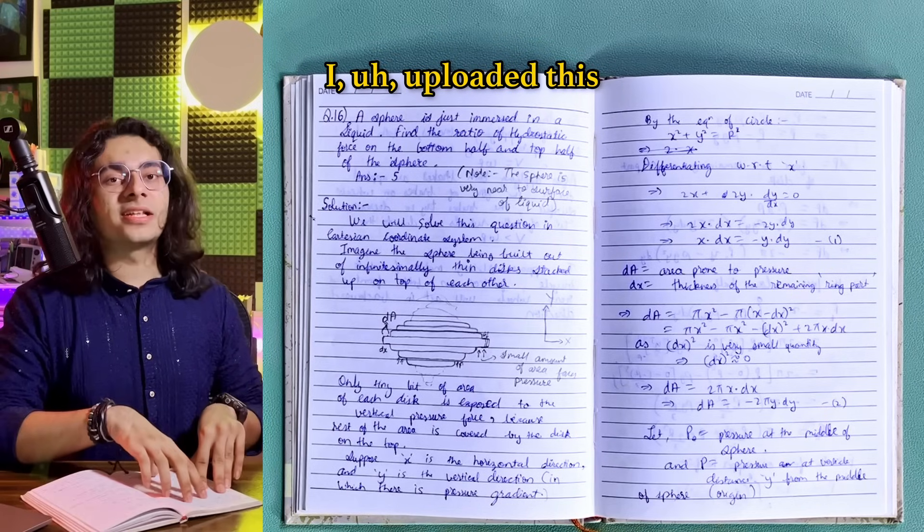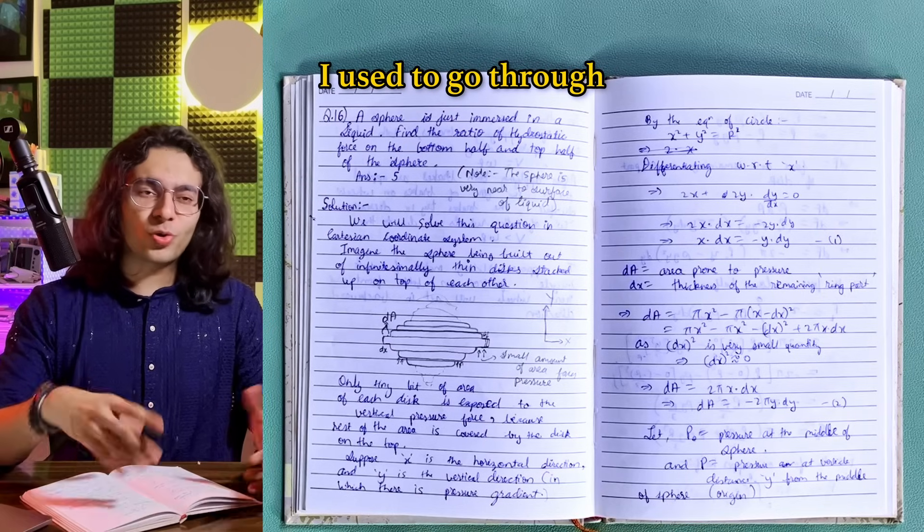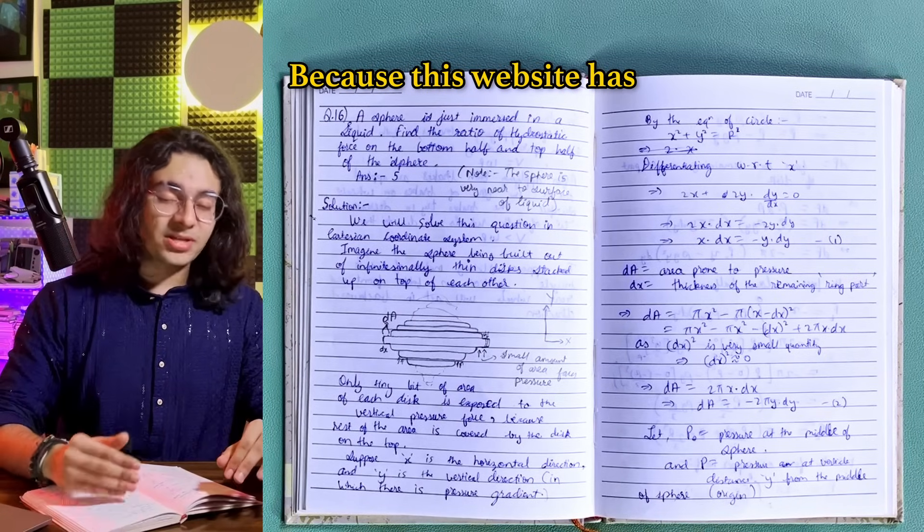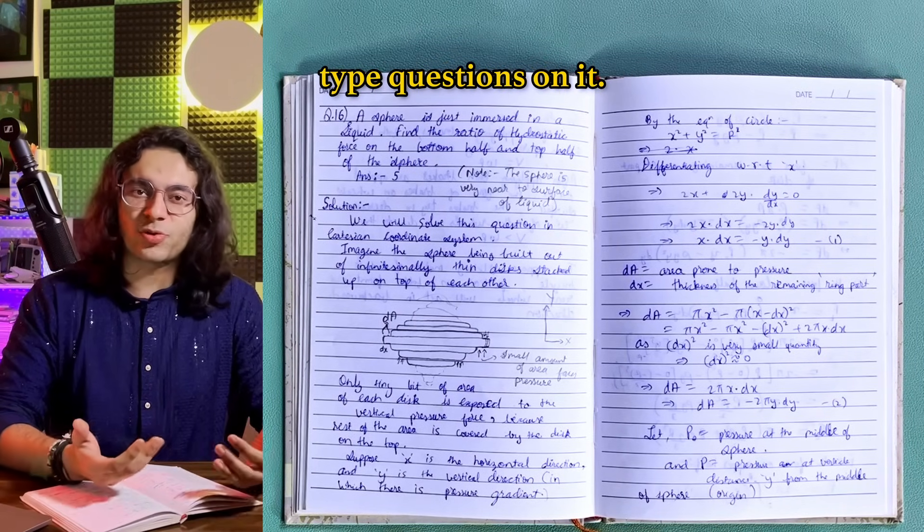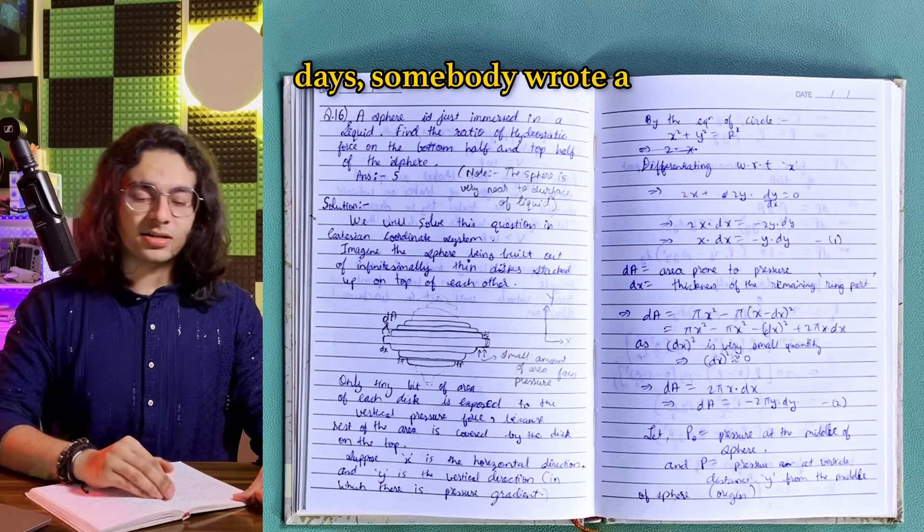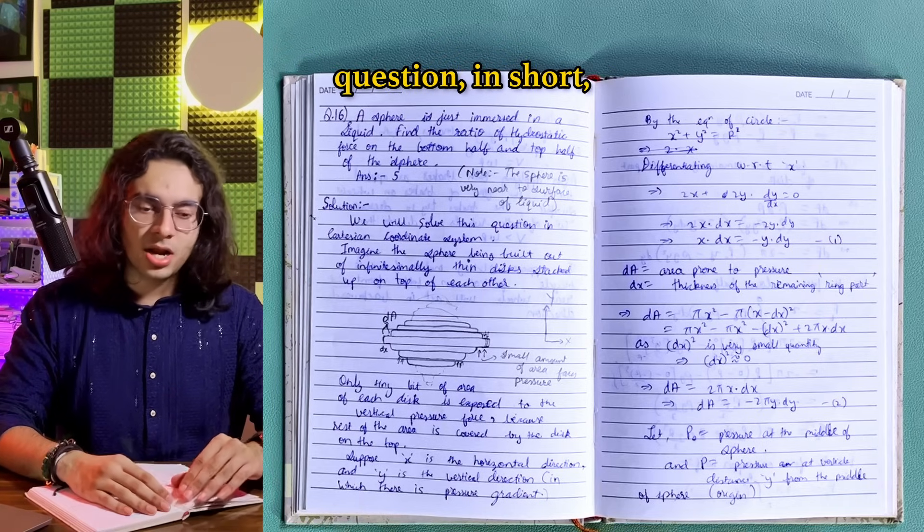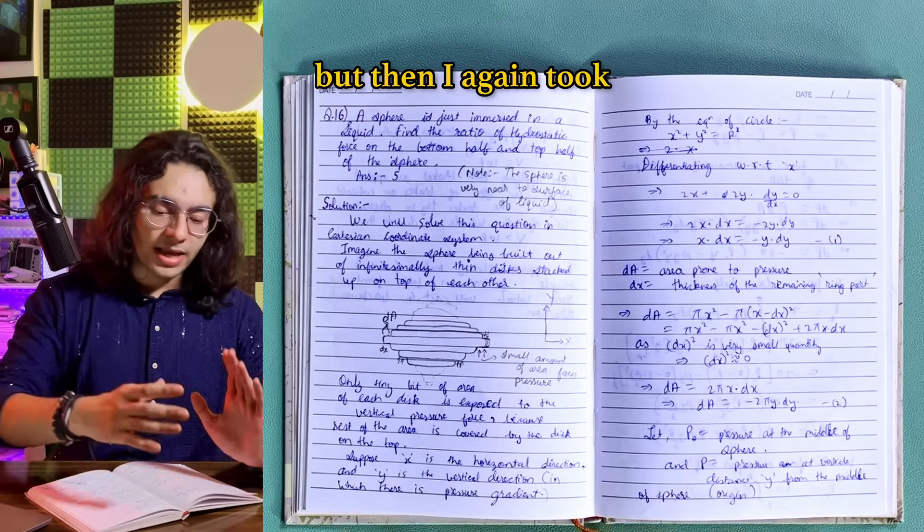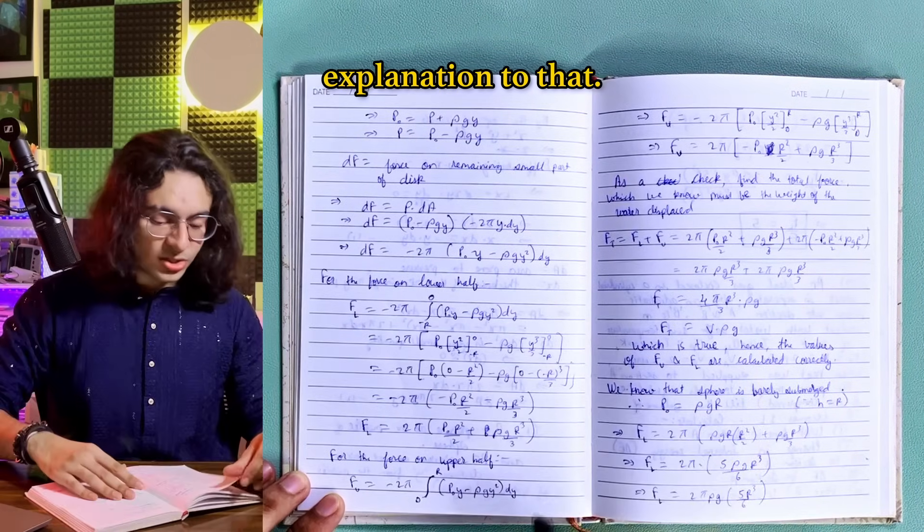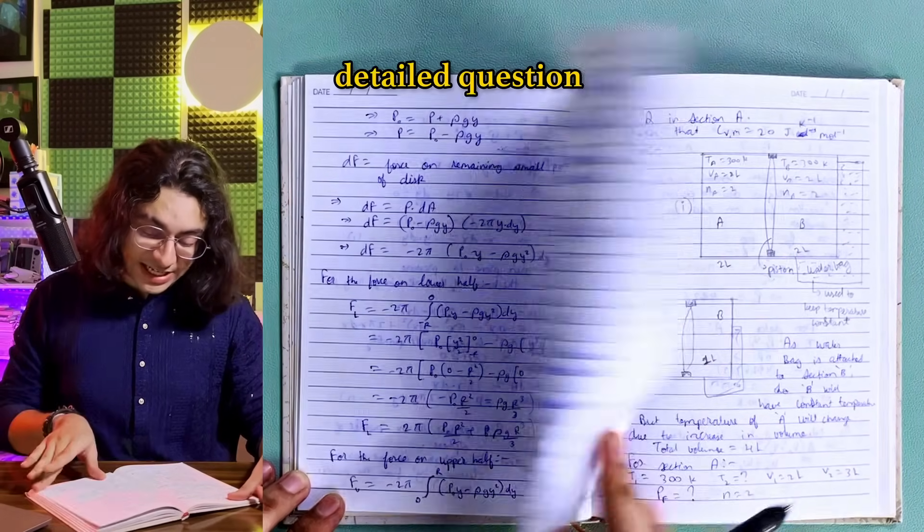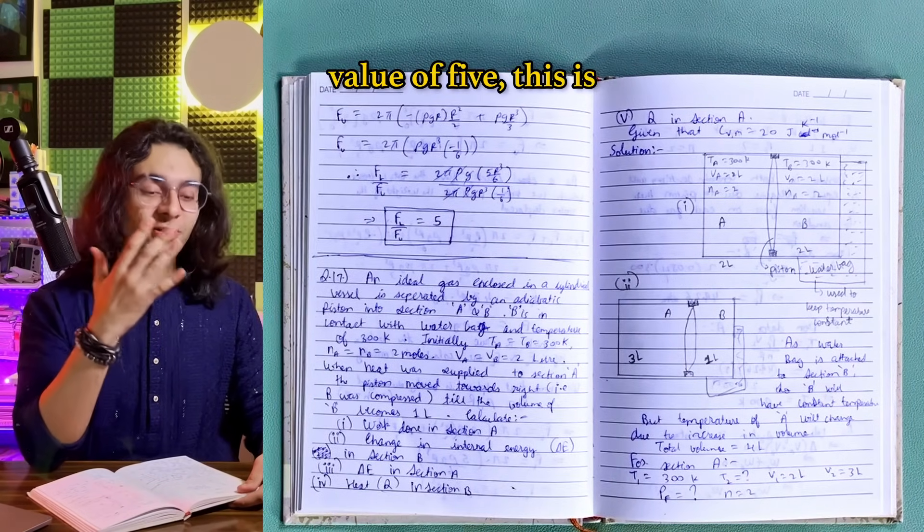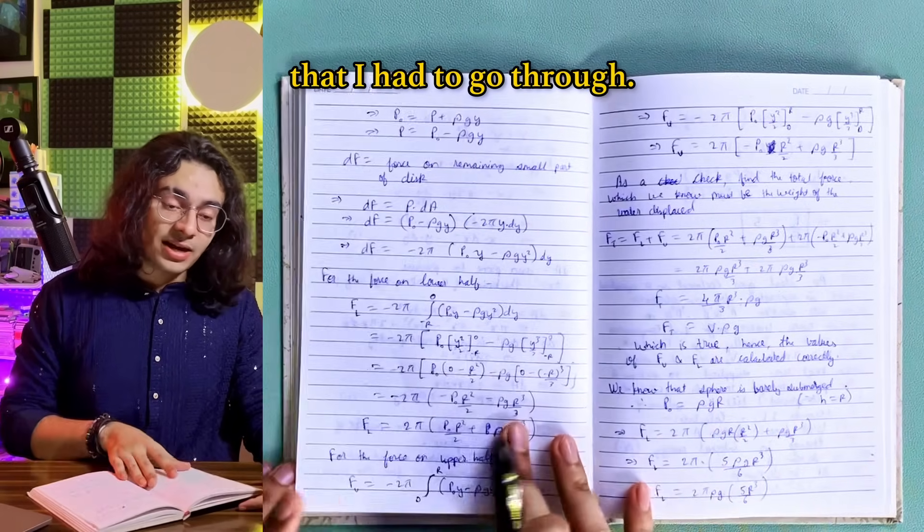I uploaded this question on brilliant.org. It's a website that I used to go through a couple of times in a week to solve some practical questions because this website has a lot of fun engineering type questions on it. And I uploaded this question on that website and after a couple of days, somebody wrote a good solution to that question in short, but then I again took some hints from that question and I went on the internet to find a proper detailed explanation to that. So here you can see the detailed question and the answer is five, just to get a numerical value of five.